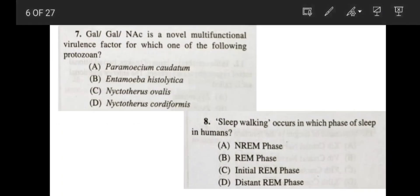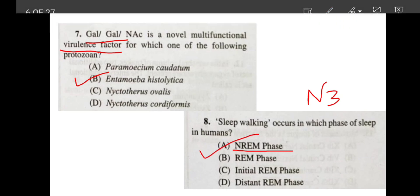Now, coming to the next question. Gal-gal-nac is a novel multifunctional virulence factor for which one of the following protozoan? Gal-gal-nac-lectin is a virulence factor for entamoeba histolytica. So correct answer is option B. Now, coming to the question number 8. Sleepwalking occurs in which phase of the sleep in humans? Sleepwalking occurs in the N3 phase, or the deepest sleep phase, which is included in the NREM or non-rapid eye movement phase. So correct answer is option A.